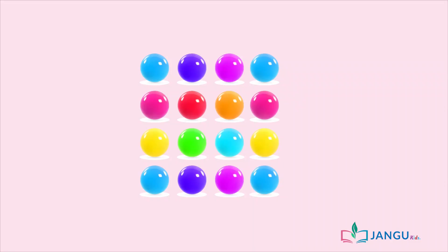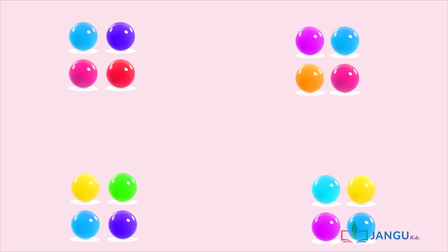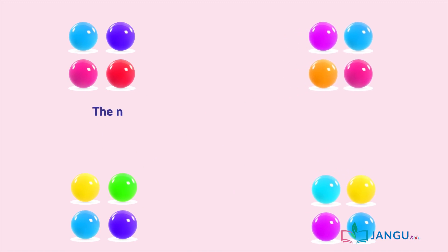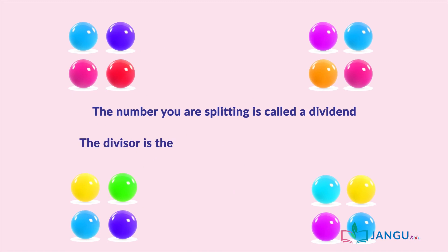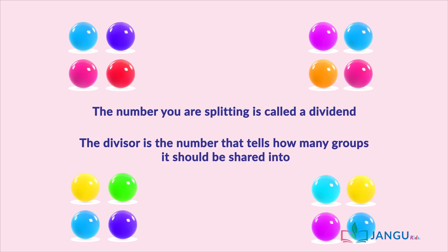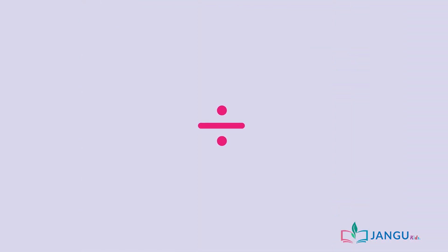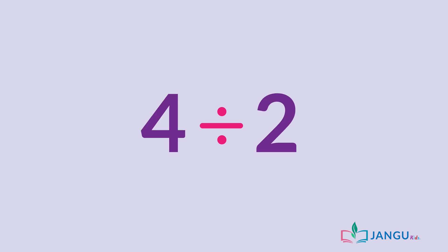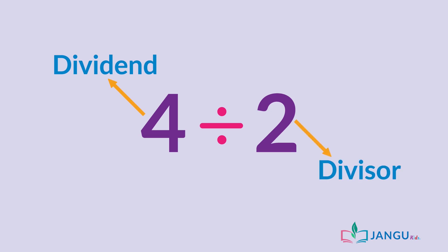Division is splitting a number or object into parts. The number you are splitting is called a dividend, and a divisor is the number that tells how many groups it should be shared into. The symbol for division is this. For this math problem, 4 divided by 2 — 4 is the dividend and 2 is the divisor.